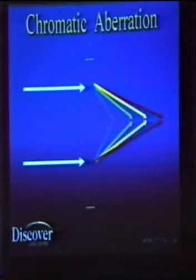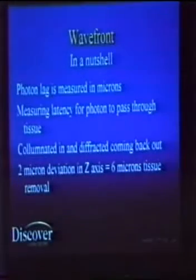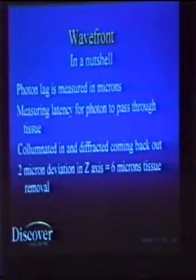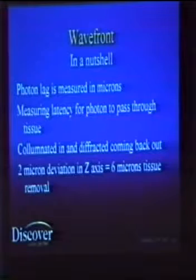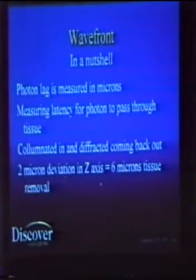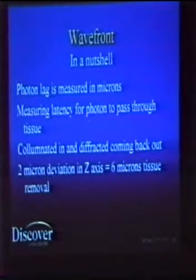Chromatic aberration — can we ever treat this or solve this? I think it's going to be a little bit difficult, but we'll see. The wavefront system can obtain data for the wave map in roughly about 15 seconds. In a nutshell, when a photon emits from the macula, comes back through the system, and is picked up by the lenslet array, for every 2 micron deviation or lag in the z-axis, approximately 6 microns of tissue needs to be removed.